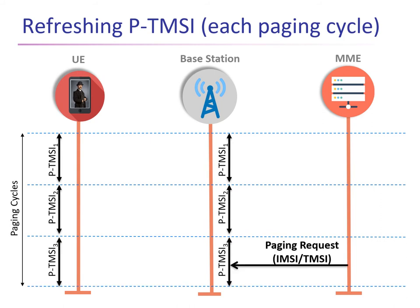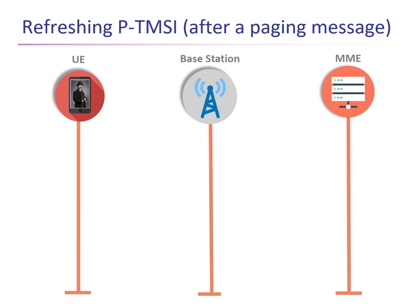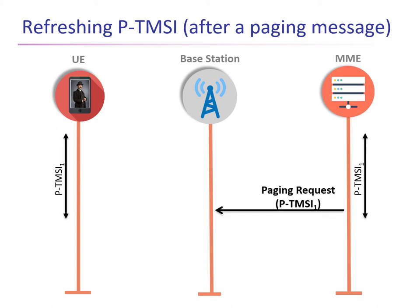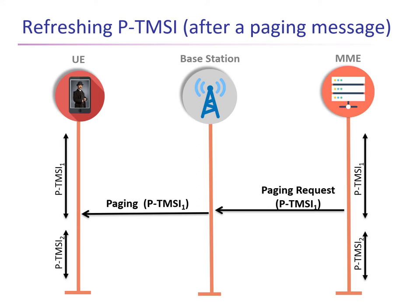If there is a paging request during a particular paging cycle, the base station checks the current PTMZ value of that particular UE. In the second approach, which is more computationally efficient, we propose updating the PTMZs only after an actual paging message is received by the cellular device. In this case, the core network — represented by the MME — and the UE maintain these lists instead of the base station. Whenever there is a paging request, the MME uses the PTMZ identifier to send it to the base station, which relays the information to the cellular device. After the actual paging request is received by the UE, both the UE and the MME refresh their PTMZ values to the next value.